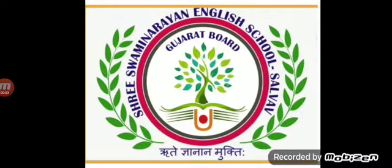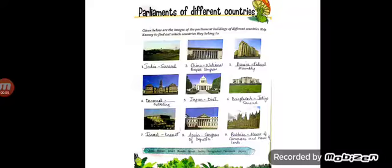Jai Swaminarayan students, today we'll be doing page number 16 and 17. Let's start with page number 16, parliaments of different countries. Given below are the images of the parliament buildings of different countries. Help knowing to find out which countries they belong to.